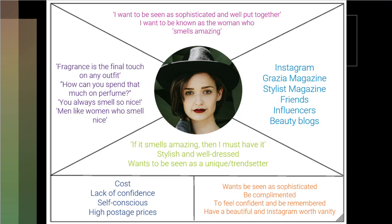The last quadrant is Say and Do. She might say, 'If it smells amazing, then I must have it' — for example, when she sees an advertisement on TV or social media. From that, her attitude is to put herself well-dressed, become stylish, and want to be seen as unique or a trendsetter. What she hears, what she sees, and what she thinks all influence her attitude.